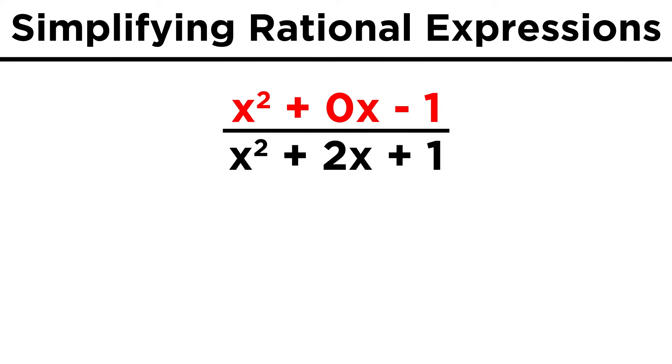This will allow us to factor like we normally do, because there are indeed factors of negative one that add up to zero, and those are one and negative one. So this expression can be written as the product of x plus one and x minus one.